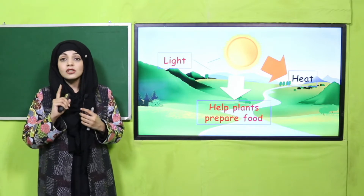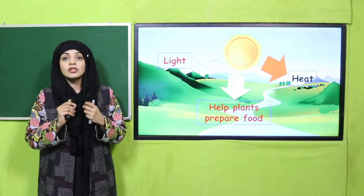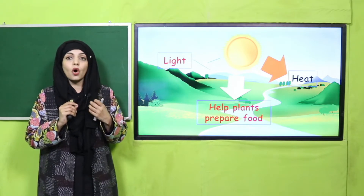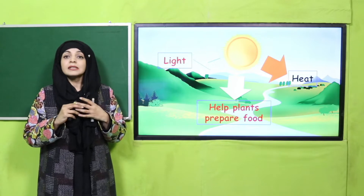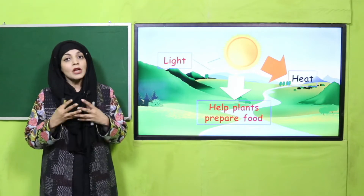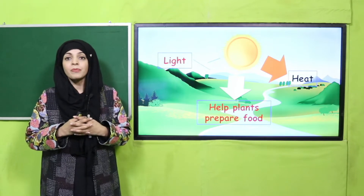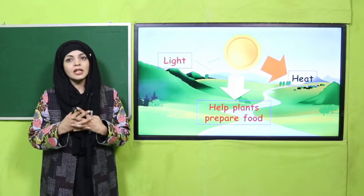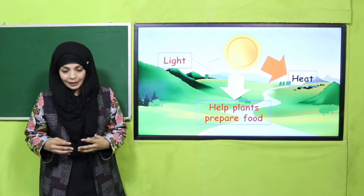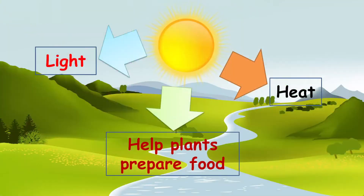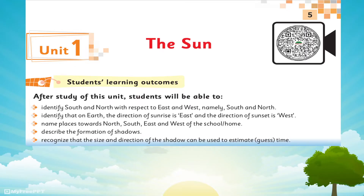But this is not the only use of the Sun. Sun ke aur se bohot saara faayda hai. One benefit we will learn in this lesson is that the Sun helps us find our way — hume raasta dhundne mein madad karta hai. How does it help us? I will tell you further ahead in the lesson.